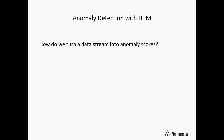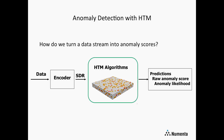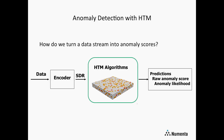At a high level, here's how we do this before getting into the details. Data comes in on the left, and the first step is to convert it into sparse distributed representations using encoders. Those SDRs — ones and zeros — are what the algorithms understand. We feed those into the HTM learning algorithms, which learn the spatial and temporal patterns in the data. Internally they're constantly making predictions about what's going to happen next. We take those predictions and compute a raw anomaly score, then do an additional step to compute an anomaly likelihood value.